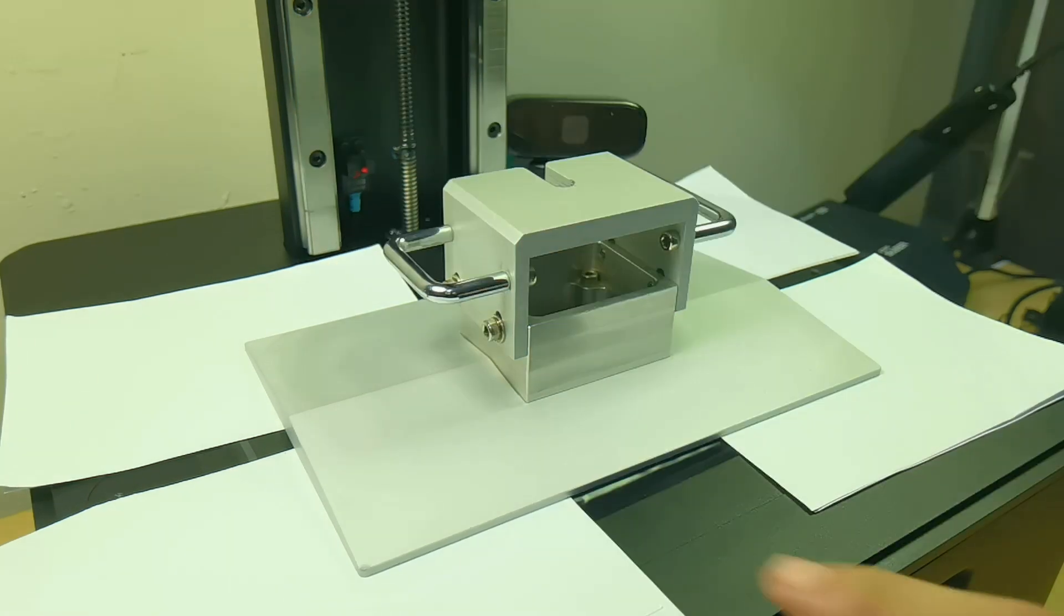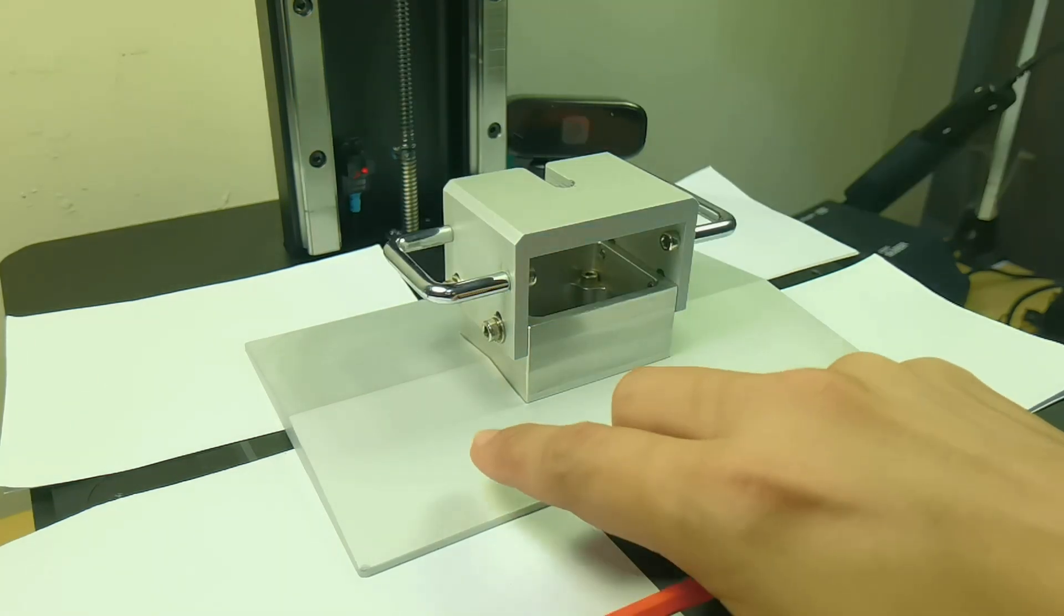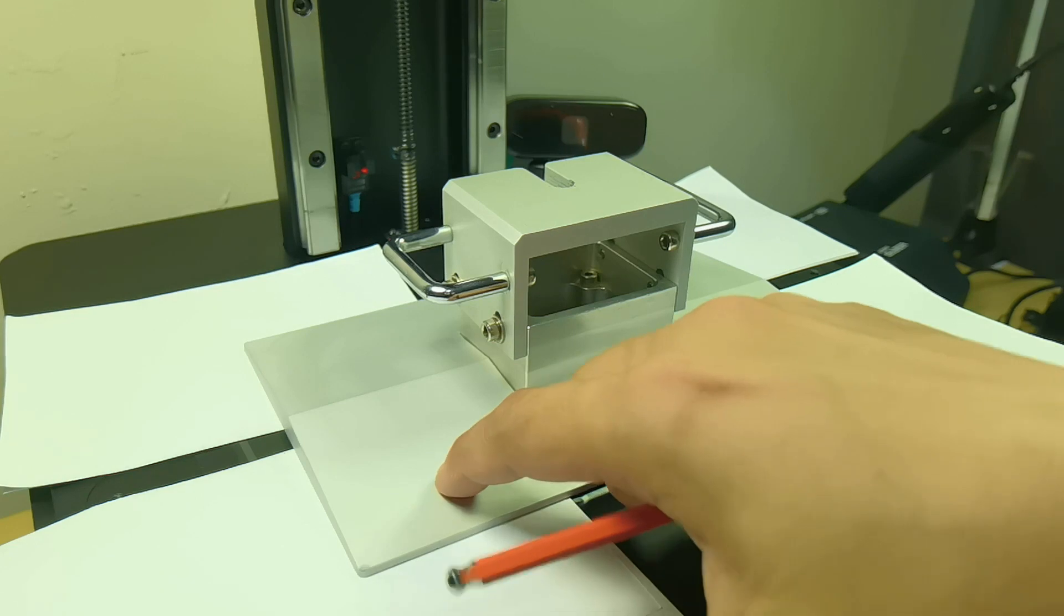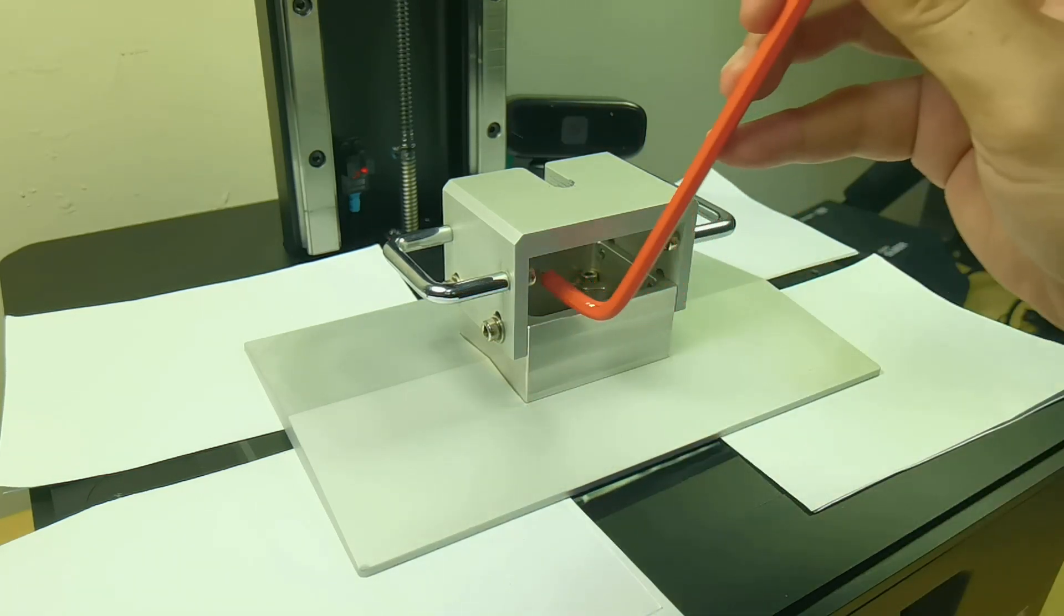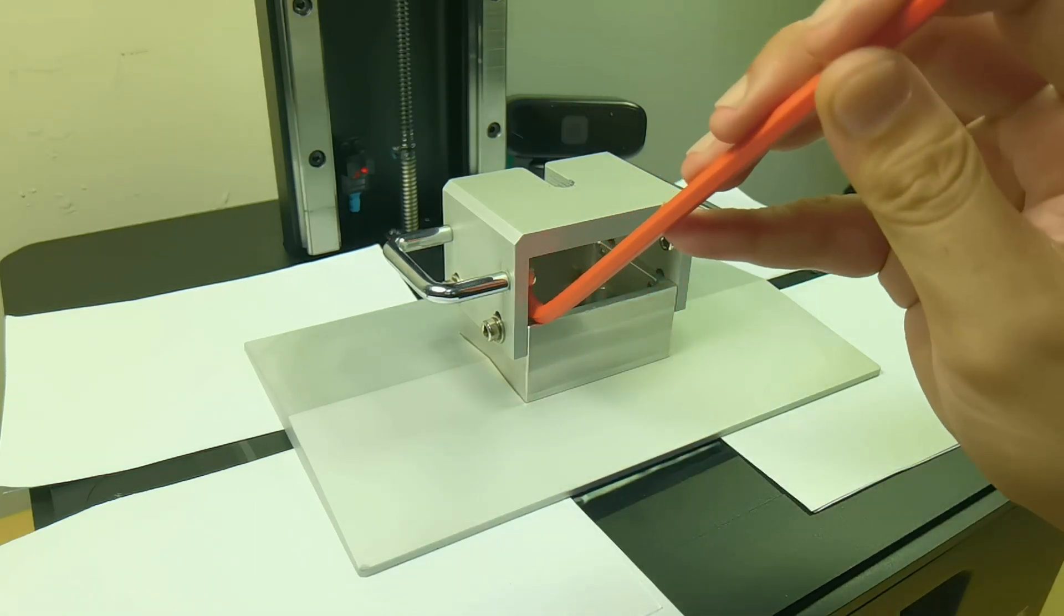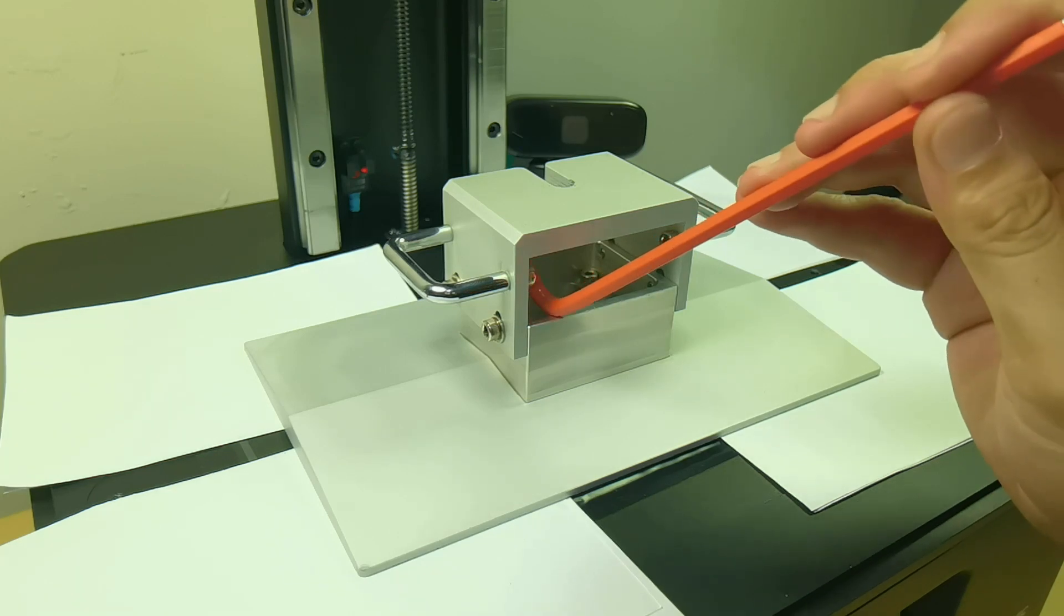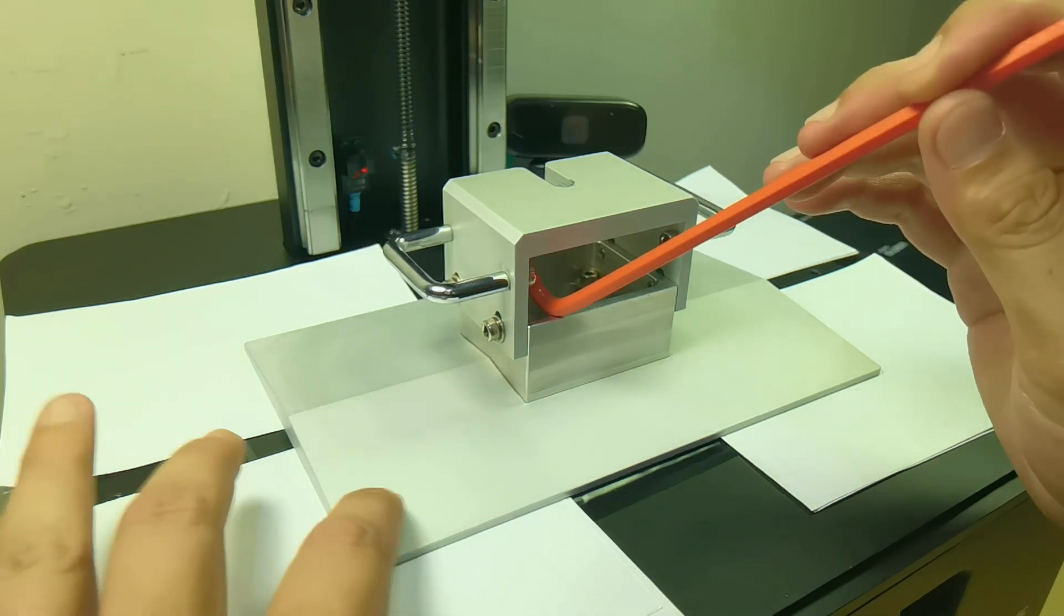And if the paper is too loose, which means it needs more pressure here, you could put the Allen key here and it will act like a lever to press down this corner here.